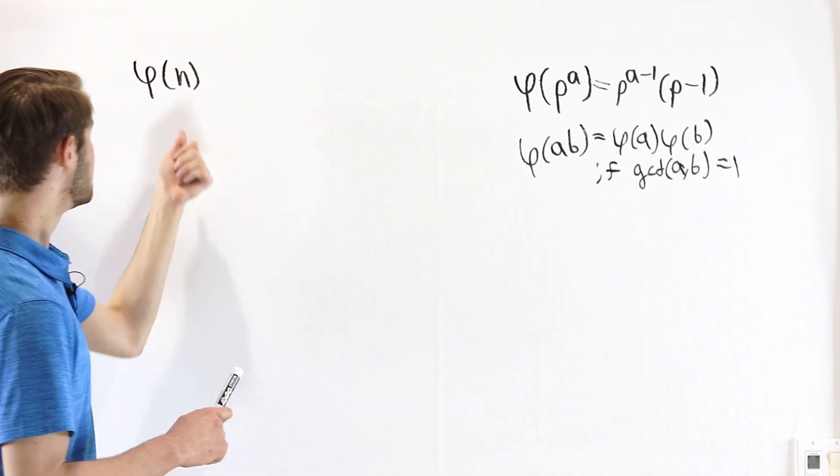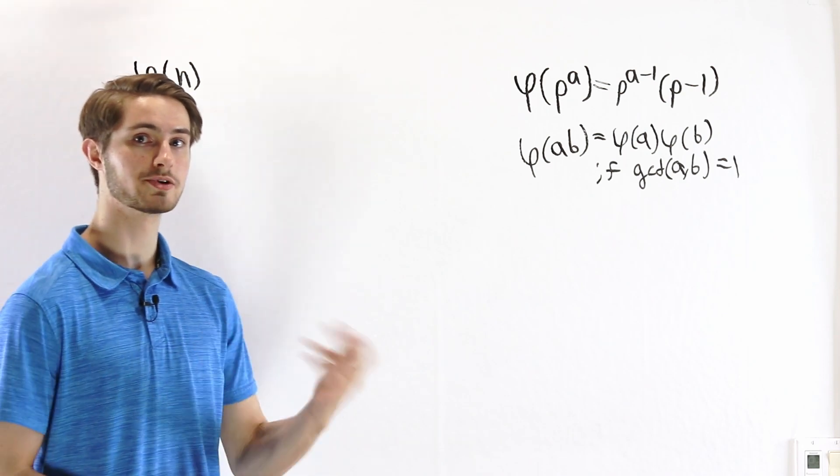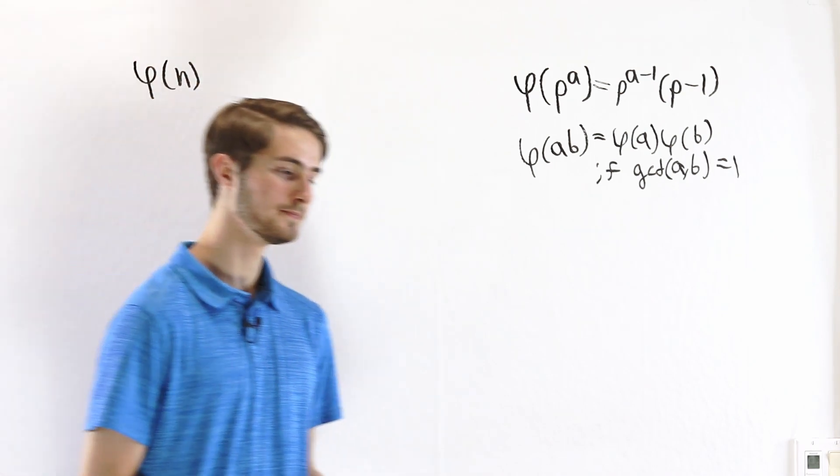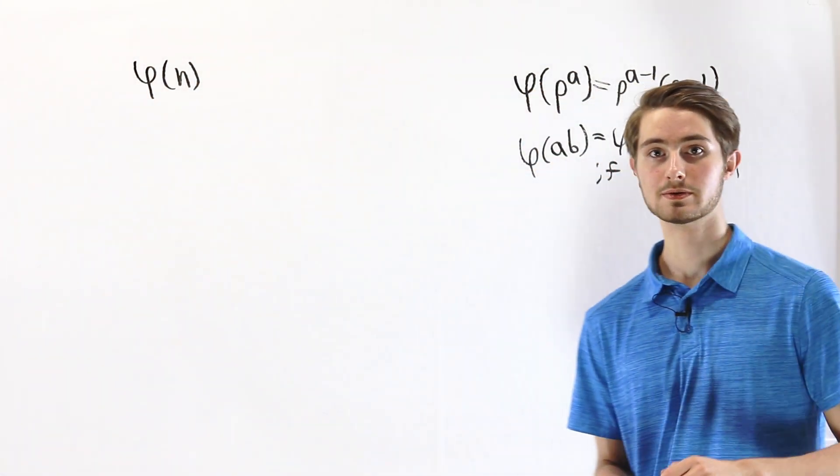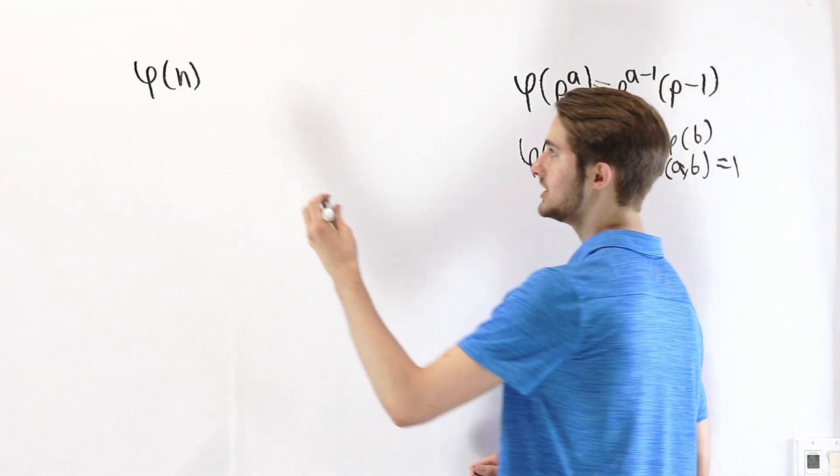Now in order to do the general formula, we're going to look at some integer that's not necessarily a prime number or a prime power. But by the fundamental theorem of arithmetic, we still have some information about n.